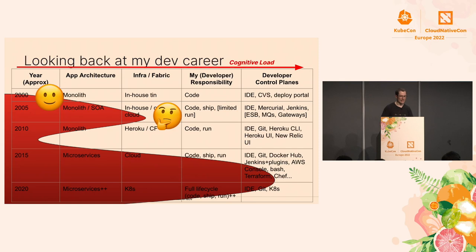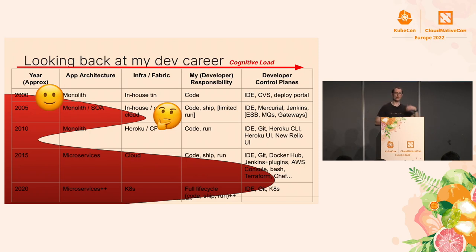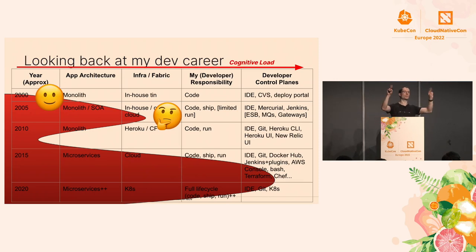It got a bit more tricky around 2005. I was doing a lot of classic SOA. The promise was standardized workflows and interoperability — XML, all the things. But anyone who lived through that era will recognize the promise was there but the delivery was not quite there. I had to think more about shipping and running now as a developer, because my code wasn't just running on an app server — it was running in an enterprise service bus, a message queue, enterprise middleware. It was a lot trickier.